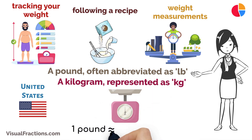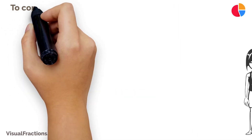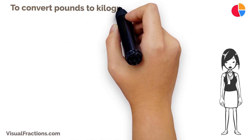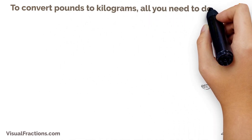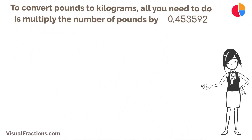Here's the key part: one pound is equal to approximately 0.453592 kilograms. To convert pounds to kilograms, all you need to do is multiply the number of pounds by 0.453592.